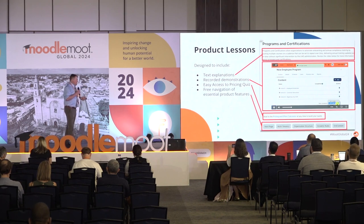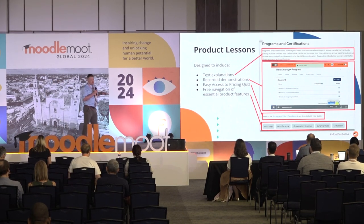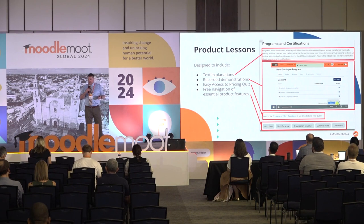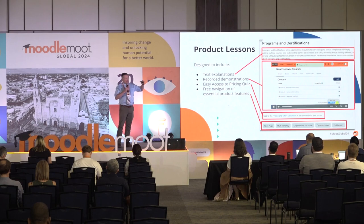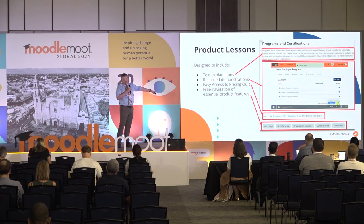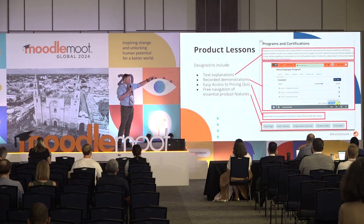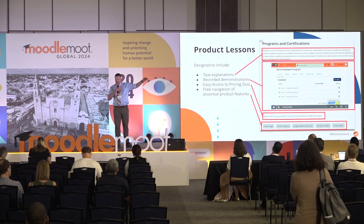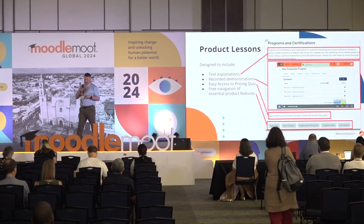Also, free navigation of essential product features. If you're familiar with the architecture of the lesson activity, it allows you to put pages and then jump between those pages in any order that you like. This is my idea of what the essential product feature set of Moodle Workplace is: multi-tenancy, organization structure, dynamic rules, and programs and certifications — the highlights that differentiate Workplace from Moodle Core.